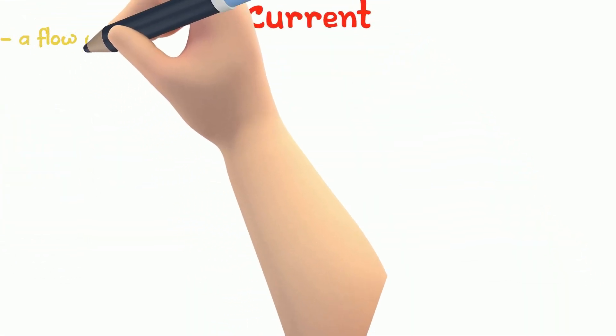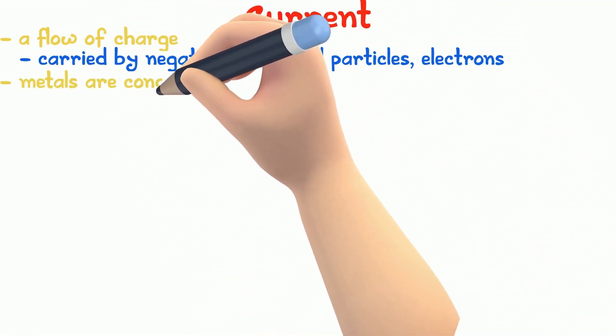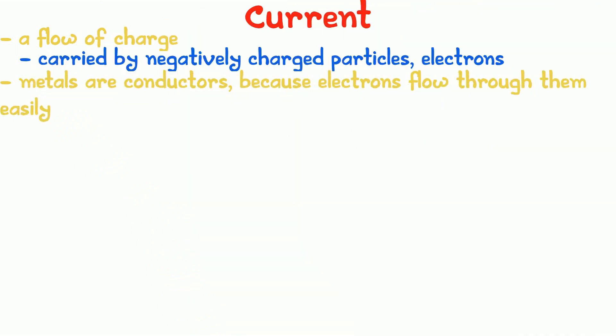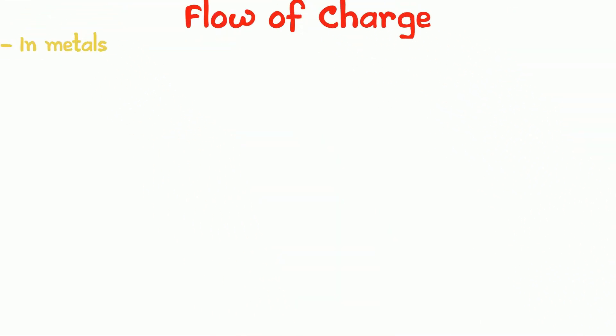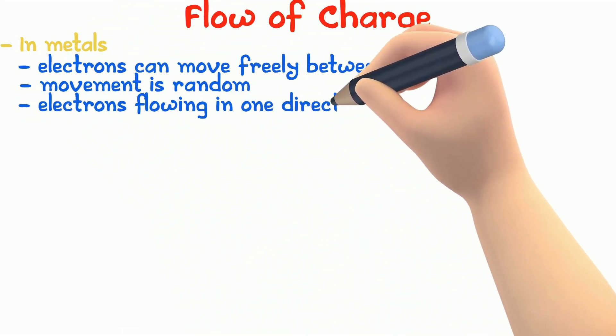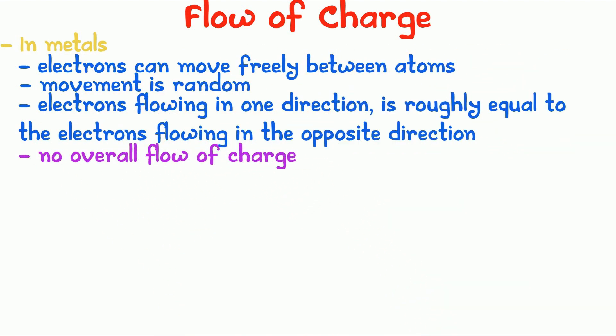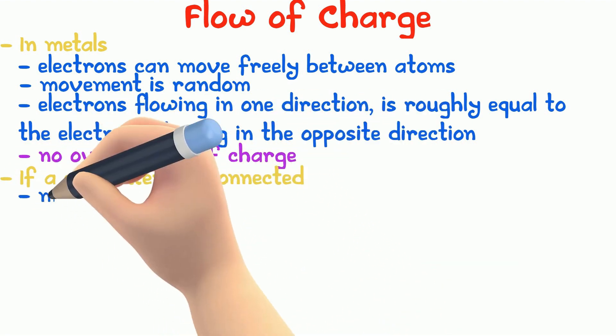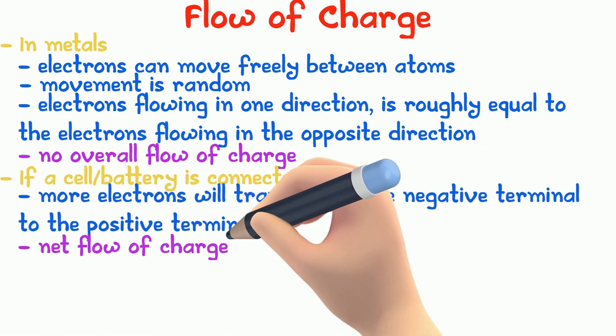Electric current is a flow of charge. These charges are carried by negatively charged particles called electrons. Electrons can flow through metals easily which is why metals are called conductors of electricity. Plastics are poor conductors of electricity because electrons do not pass through them easily. Poor conductors of electricity are called insulators. In metals, electrons can move freely between atoms. Normally, this movement is random which means electrons flowing in one direction are roughly equal to the electrons flowing in the other direction. This would mean that there is no overall flow of charge. If a cell or battery is connected, more electrons will flow away from the negative terminal towards the positive terminal. This is called the net flow of charge, which is electric current.